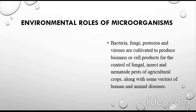We use bacteria, fungi, or protozoa so that they can produce desirable biomass or cell products that can in turn kill nematodes or pests on agricultural crops. This allows us to achieve a high yield of agricultural crops, along with control of some vectors of human and animal disease as well.